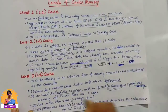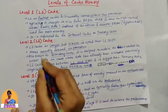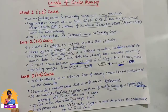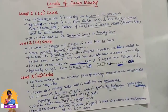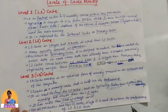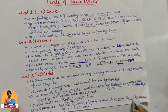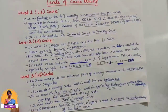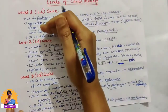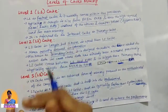L3 cache is faster than main memory but slower than L2 cache. Its size can be more than 3MB. Modern computers often have Level 3 cache, and any CPU that wants to enhance its performance can be equipped with L3 cache. However, not all processors have L3 cache, as it is used to enhance the performance of L1 and L2 cache.